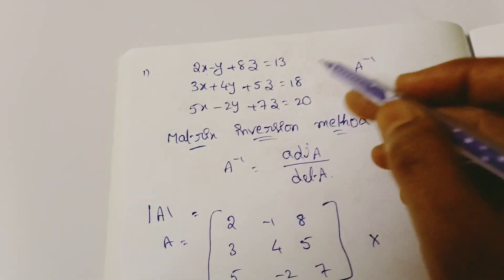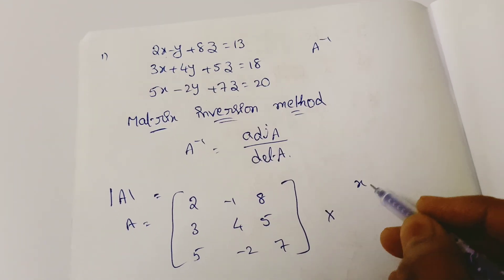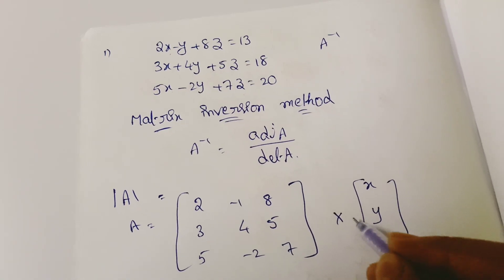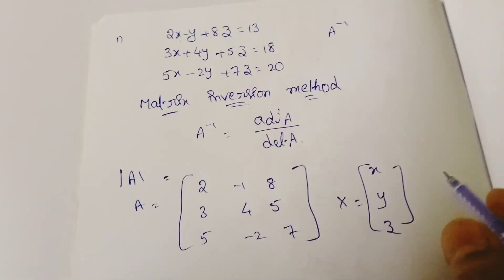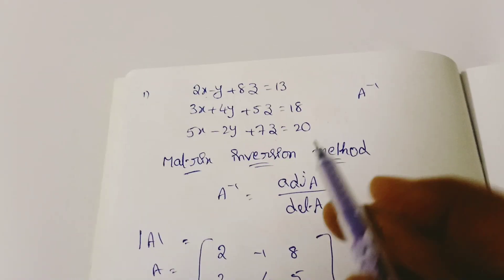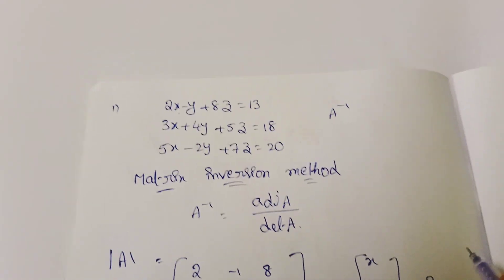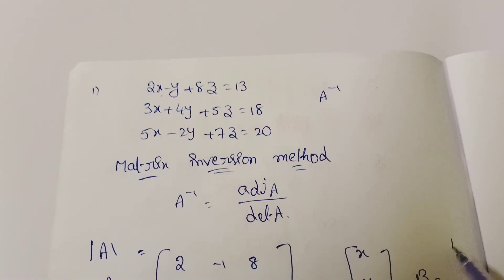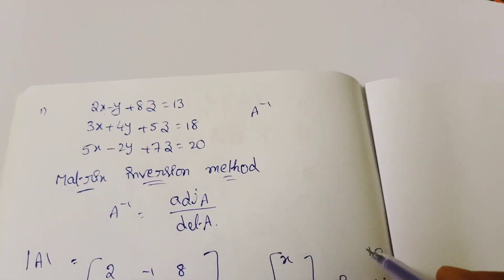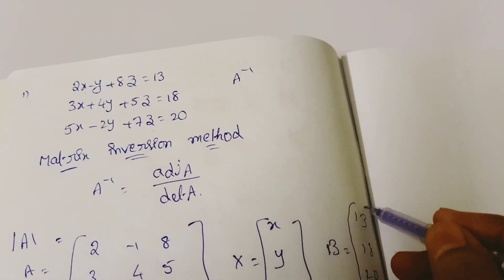This is A. Now X is the column vector of variables X, Y, Z. And B is the column vector of constants: 13, 18, 20.